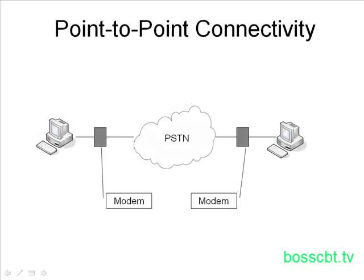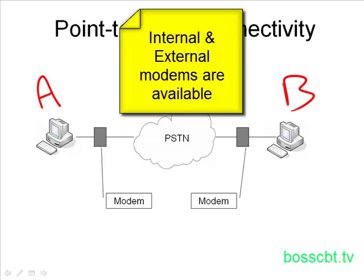We'll begin by looking at how two PCs can use analog modems to create a connection between them. Here we have two PCs — we'll call this A and this B — and each one has an analog modem. Analog modems do not have to be external to a PC; in fact, most times today you can buy a card and that card will be inside the computer itself. However, for illustration purposes, I've separated them here to more easily explain what happens.